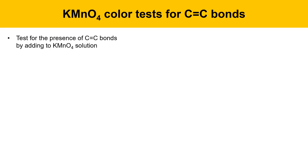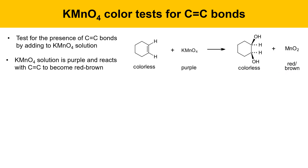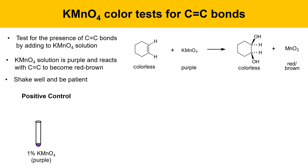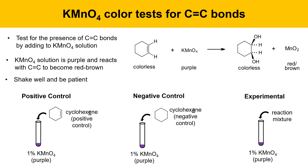Next, we'll test for CC double bonds using potassium permanganate solution. A colorless alkene reacts with purple permanganate to give a colorless diol product and red-brown manganese dioxide. This reaction is slower than the bromine test, so shake well and be patient. Again, we'll do a positive control with cyclohexene, a negative control with a substrate lacking an alkene, and then the experimental sample. If the result is positive, the molecule contains a CC double bond; if negative, it doesn't.